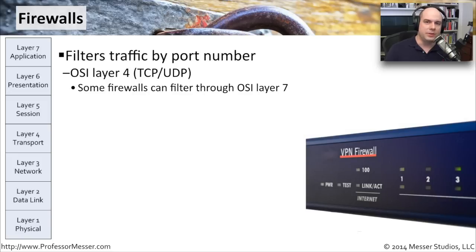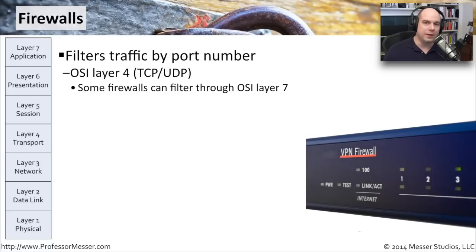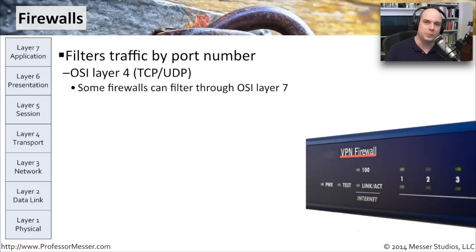Firewalls cover the security perspective for the rest of the OSI stack. We've talked about switching at layer two and routing at layer three. At layer four and all the way up to layer seven, we have firewalls. Firewalls are really our first and last line of defense when traffic is going in and out of our network. If we need to protect servers, protect our users, or separate ourselves from the big bad internet, it's a firewall that's going to be doing that.